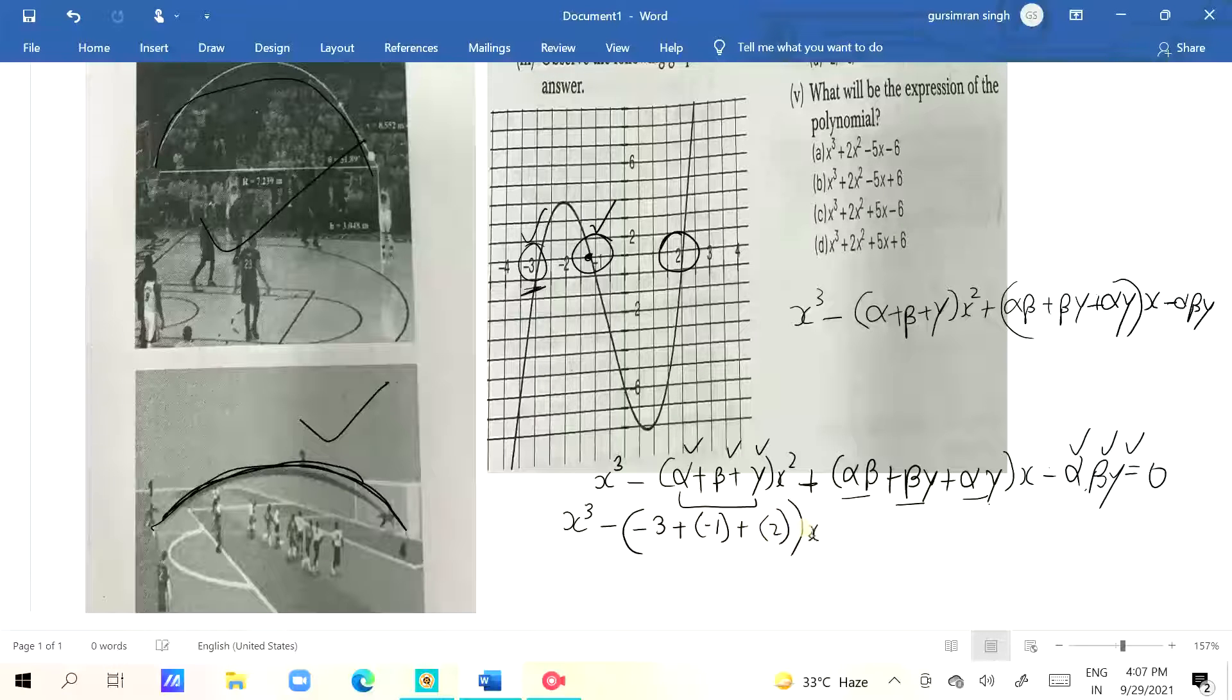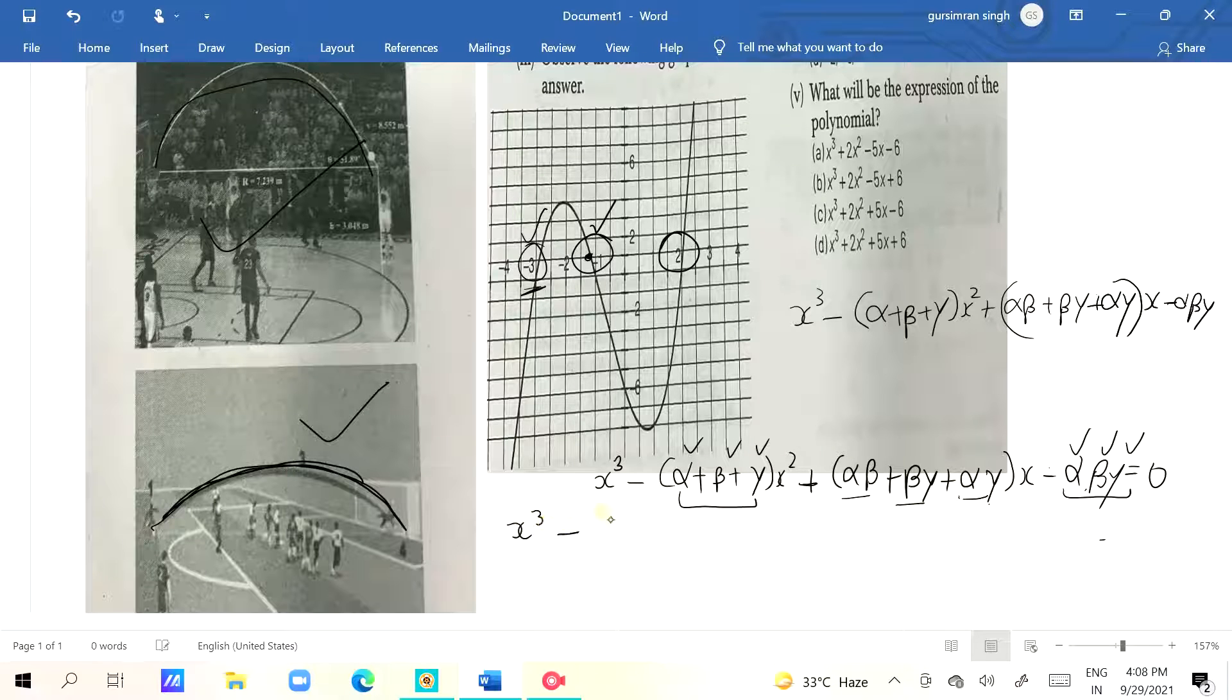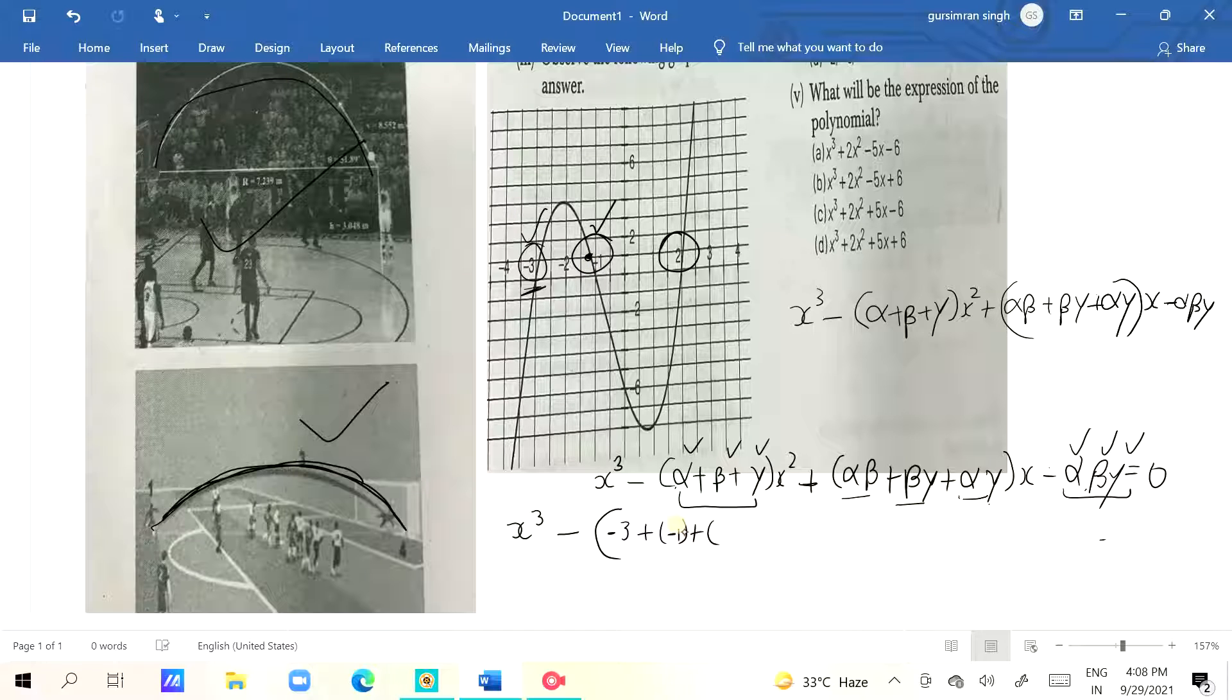(x minus (-3))(x minus (-1))(x minus 2), which is (x + 3)(x + 1)(x - 2) = 0. Now alpha is -3, beta is -1, gamma is 2. So x³ minus (alpha + beta + gamma)x² plus (alpha·beta + beta·gamma + alpha·gamma)x minus (alpha·beta·gamma) = 0. That is x³ minus (-3 + (-1) + 2)x² plus ((-3)(-1) + (-1)(2) + (-3)(2))x minus ((-3)(-1)(2)) = 0.